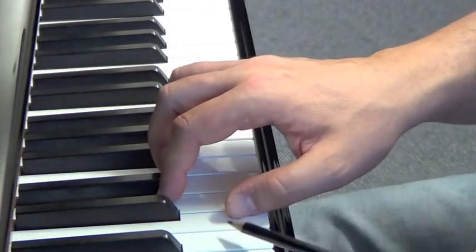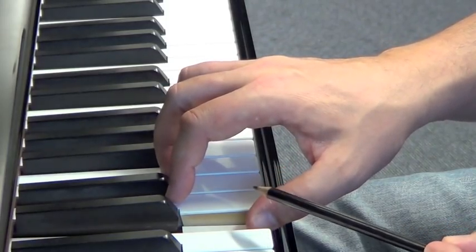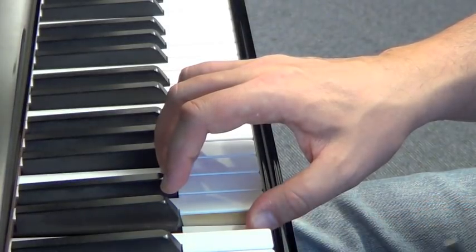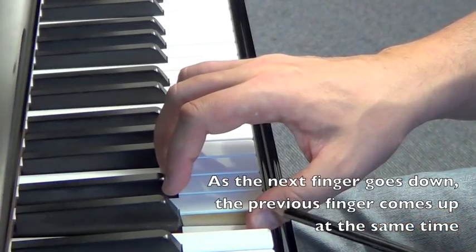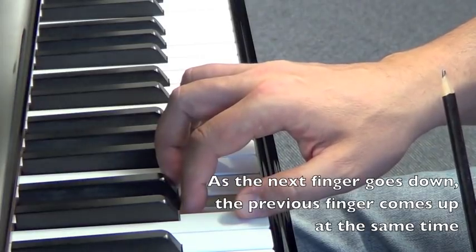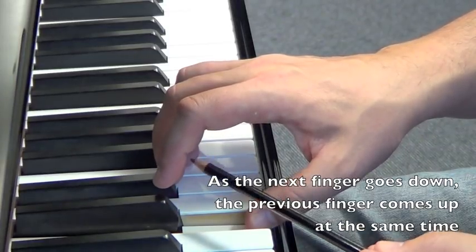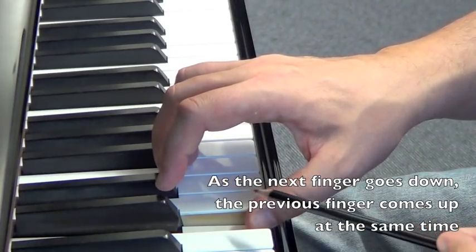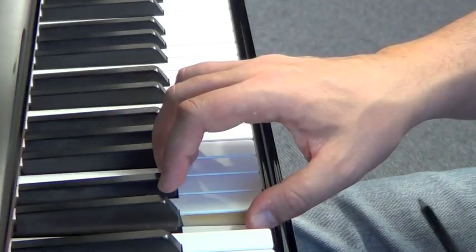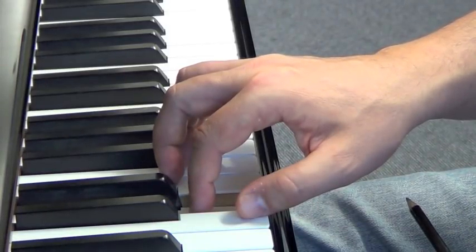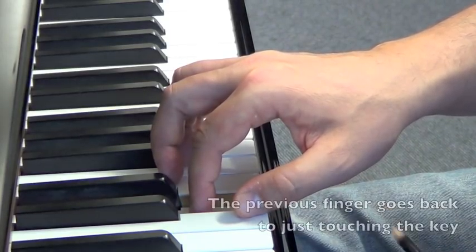Just like that. So done with the thumb, you can raise the next finger if you want a little bit. Now as finger two goes down, finger one comes up and drop. Let's do that again from the thumb. Lift finger two. As finger two comes down, finger one will come up in one impulse. And as the thumb releases the note, it will just touch the surface of the key very lightly.